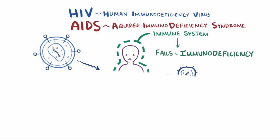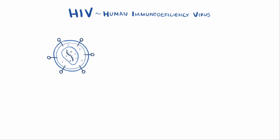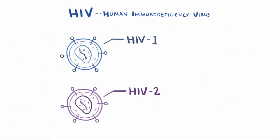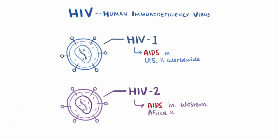There are two distinct types of HIV: HIV-1 and HIV-2. HIV-1 is more commonly associated with AIDS in the US and worldwide. HIV-2 is more rare and typically restricted to areas in western Africa and southern Asia, and is so uncommon that HIV almost always refers to HIV-1.